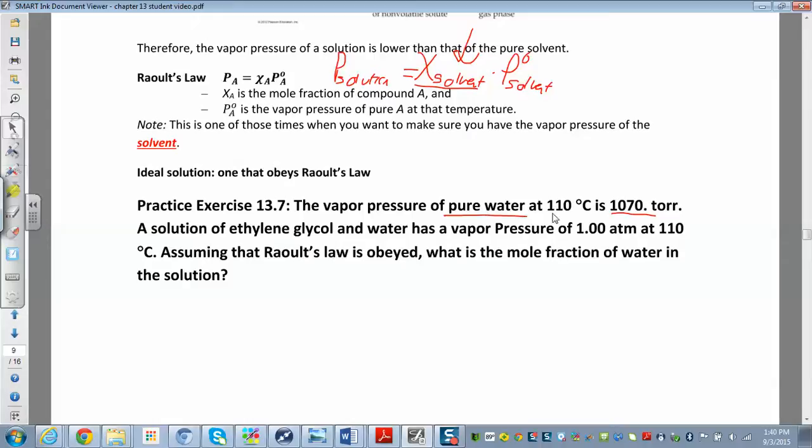Let's write that down here. So vapor pressure of pure water, pure solvent is equal to 1070 torr. The solution, so a solution of ethylene glycol in water has a vapor pressure of one atmosphere. So the vapor pressure of the solution is one atmosphere.